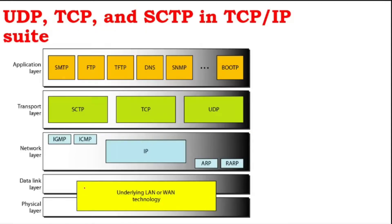Now the transport layer and the protocols used there. I have explained this already in the first unit — the protocol suite. But in the transport layer, you have only three different protocols: SCTP, TCP, and UDP.